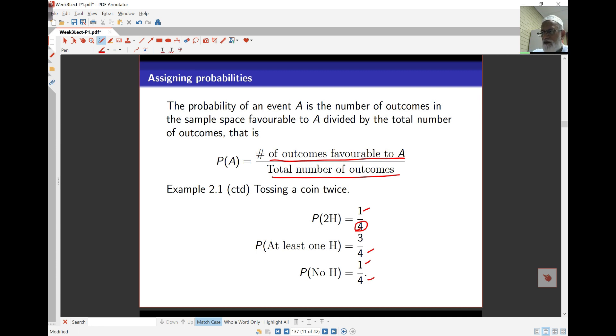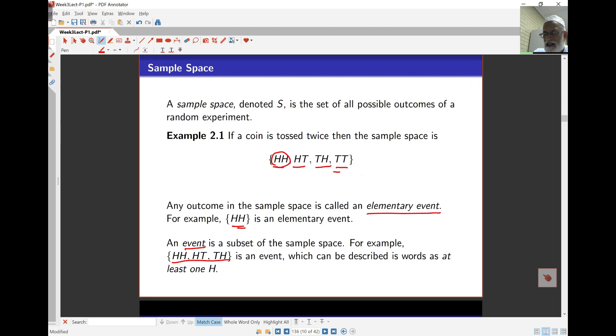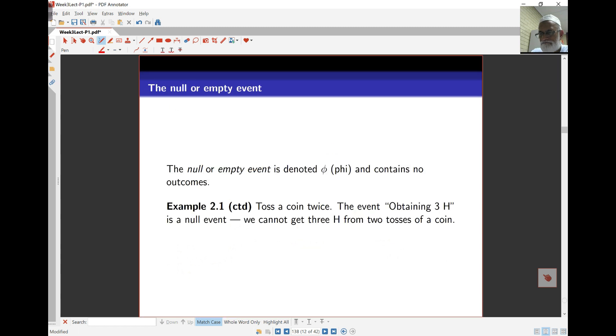You can work those things out by looking at the sample space itself. Probability of two tails means one possibility out of four. That's how probabilities are assigned. The null event is essentially the event of nothing happening, contains no outcomes at all, denoted by the Greek letter phi. If I toss a coin twice and look at the event of obtaining three heads, that's impossible—that's the null event. We cannot get three heads from two tosses of a coin.